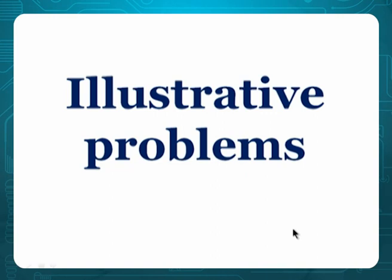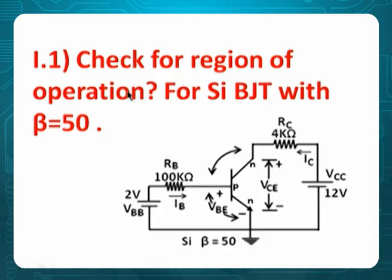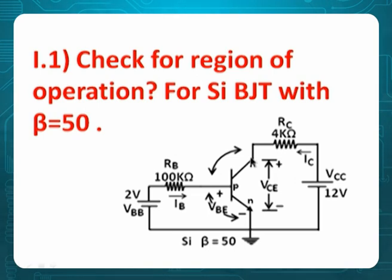Now let's go to illustrative examples, because too much theory is also boring. I am trying to illustrate ideas with problems. Check for the region of operation for a silicon BJT with beta of 50. Look at this NPN transistor — positive is given to P, so forward bias at the input. And positive is given to N at the output, so reverse bias. So you may feel input is forward and output is reverse, so it is in active region.